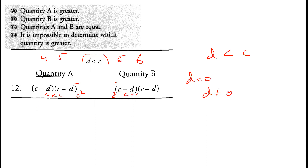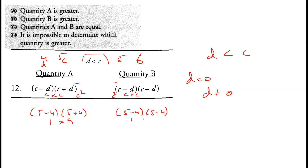Since when d equals zero the quantities are equal, but when d is nonzero quantity A is greater than quantity B, we cannot always determine which quantity is greater. So option D is correct — the relationship cannot be determined.